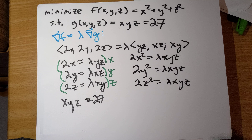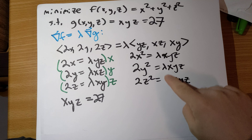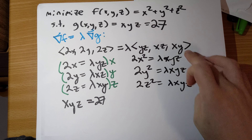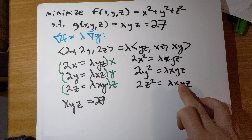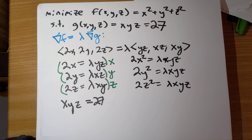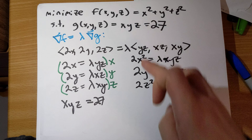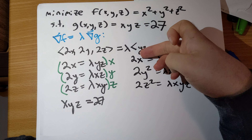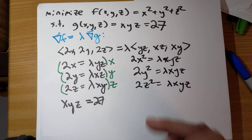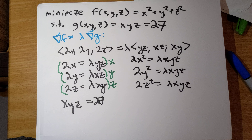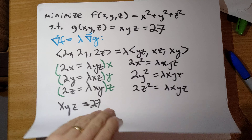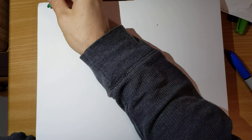Note that f(x, y, z) is the square of the distance, but minimizing the square of the distance will occur at the same point as minimizing the distance, and this will just be computationally easier to work with.